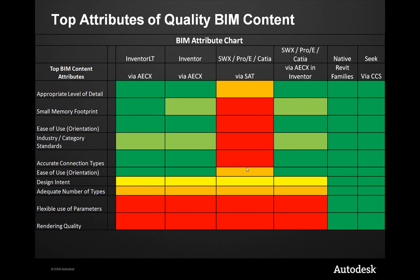We can add appropriate connection points and provide an ADSK file that will create a native Revit file. And of course, on the far right, we've got native Revit family files — what if I'm a manufacturer and I want to model my components natively inside of Revit to provide BIM content? Looking at the chart for appropriate level of detail and small memory footprint, I can achieve most of my desired results utilizing the AEC Exchange tool sets in both Inventor LT and Inventor. However, in the 2010 set of products, design intent, adequate number of types, flexible use of parameters, and rendering quality — I cannot achieve those utilizing the AEC Exchange tool set. We'll talk about why that happens later in the presentation.